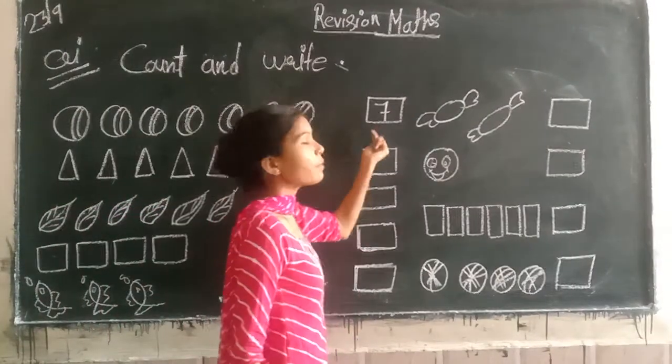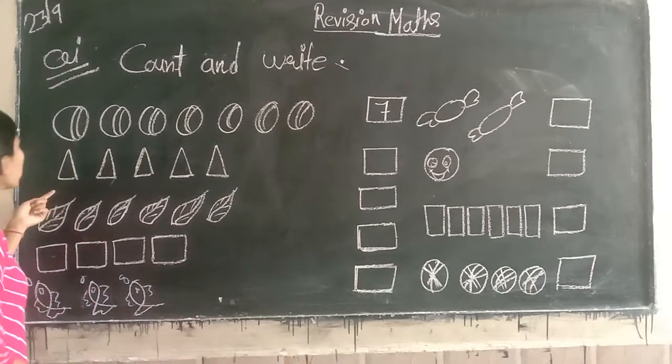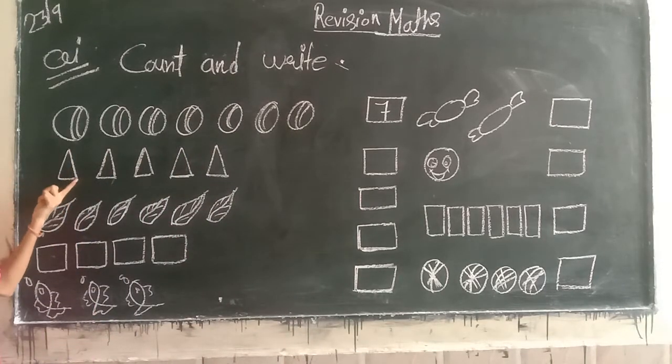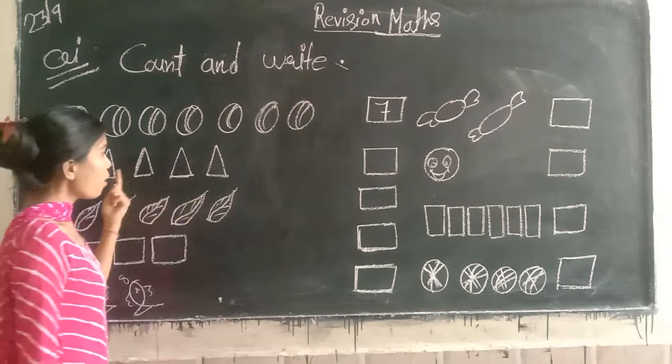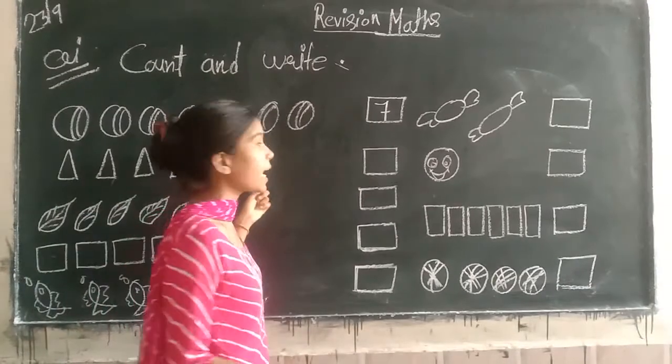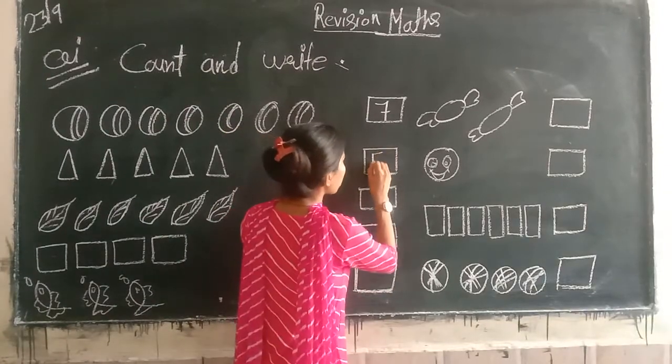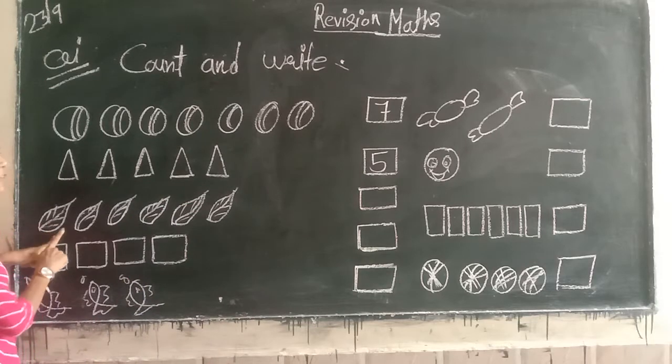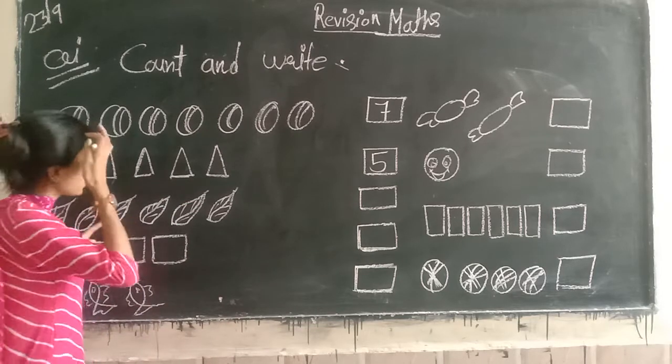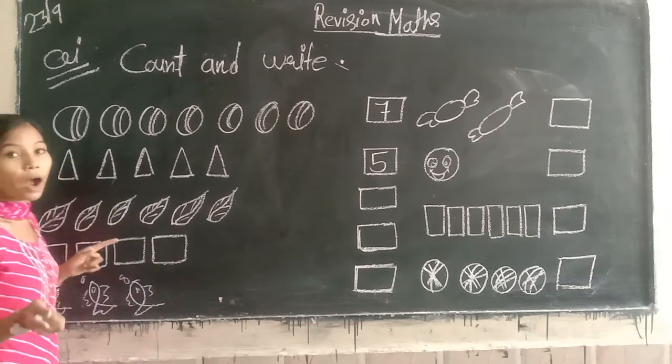Let's count these. Three, five, ten. Five is a leaf.